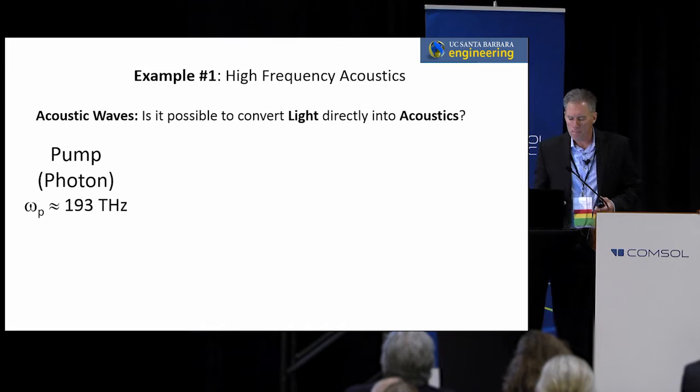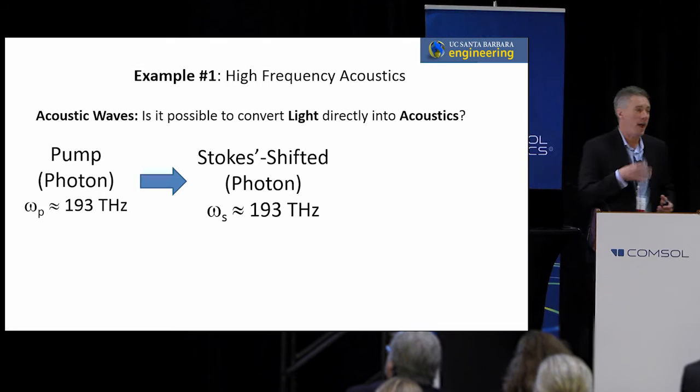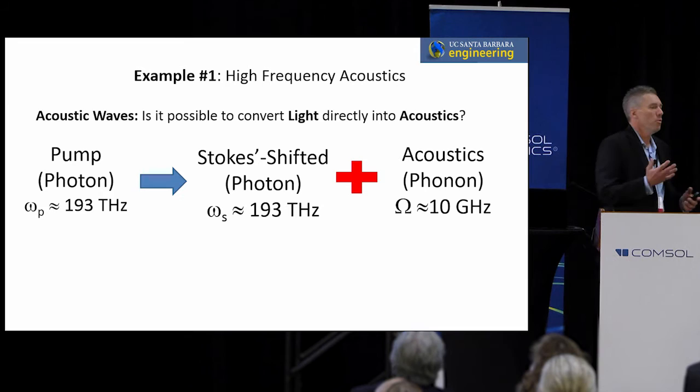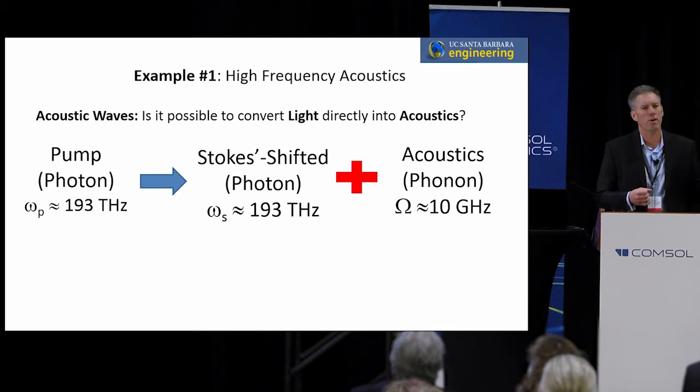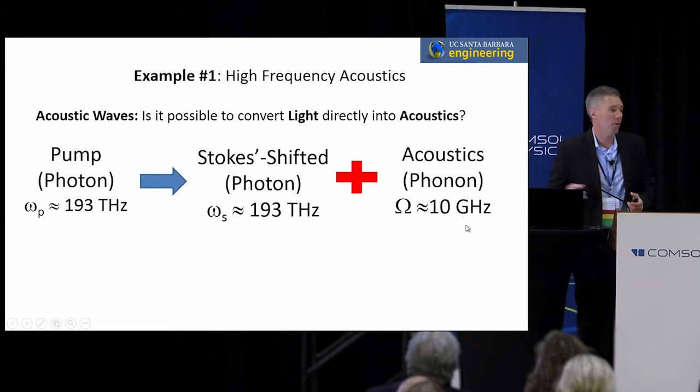One idea, if you look at it from a photon level: take an infrared photon oscillating at a couple hundred terahertz, interact it with matter in some way that it creates a Stokes-shifted photon at a lower energy level — slightly less than 193 terahertz — and then with that excess energy, generate an acoustic phonon. So you're taking one photon and generating a second photon plus a phonon, an acoustic wave. The acoustic waves would be around 10 gigahertz.